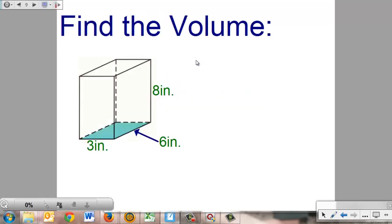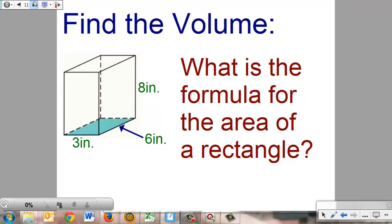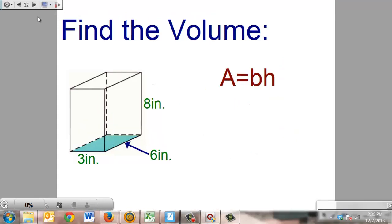Find the volume of this prism. What we have here is a rectangular prism. To do this, we're going to have to first find the base area. The base area is the area of the base. This base is a rectangle. To find the area of a rectangular shape, we have to use the formula: area equals base times height.